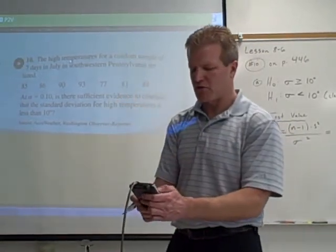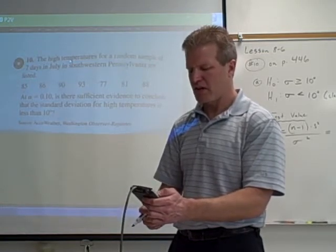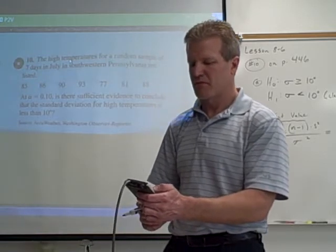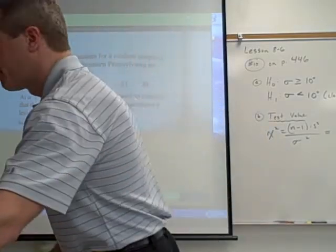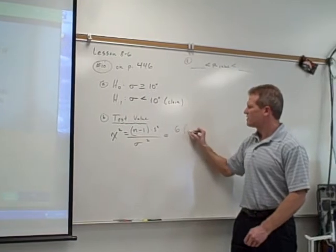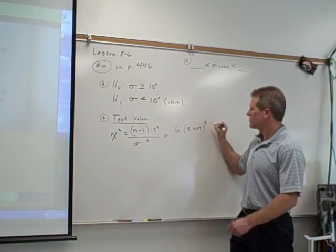Once you get that done and you quit that, you push stat, right arrow, enter, enter, and it will give you your sample standard deviation, which in this case comes out to s equals 5.407. So off my calculator, I get 5.407, and then I have to square it.